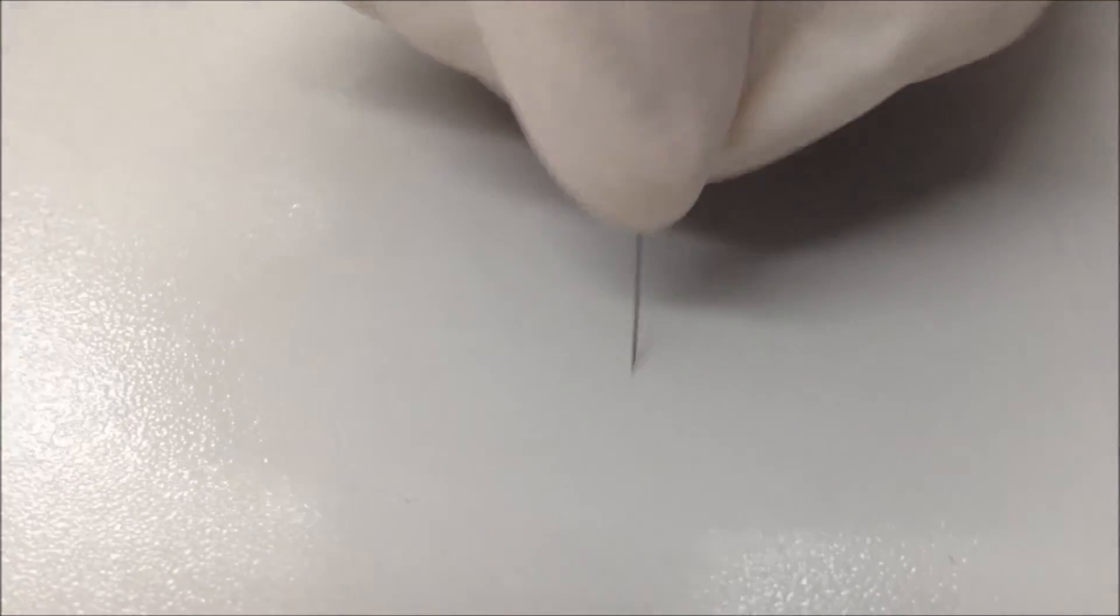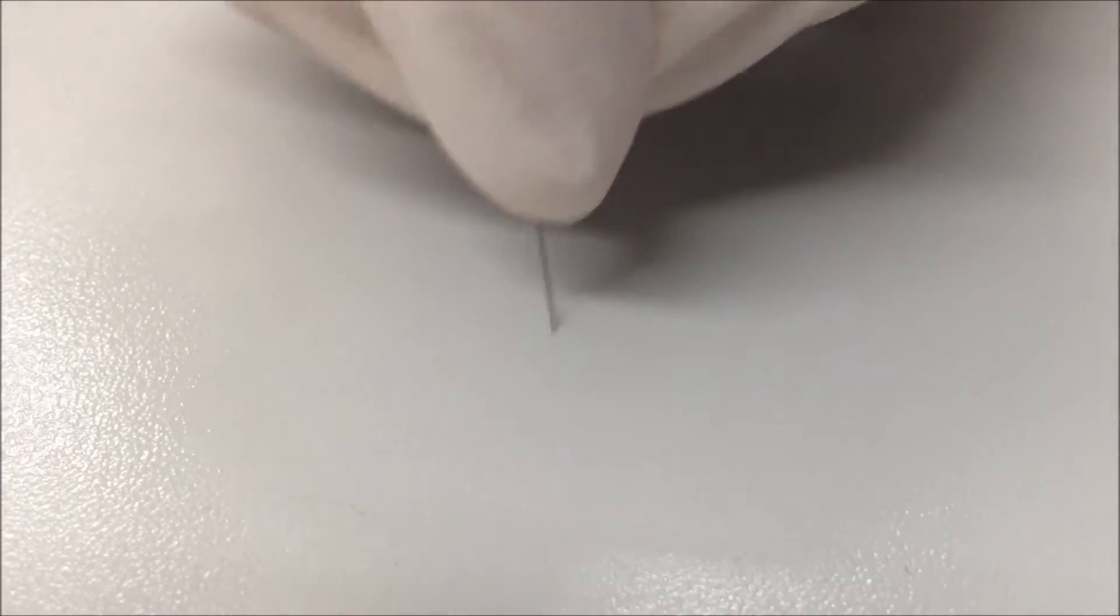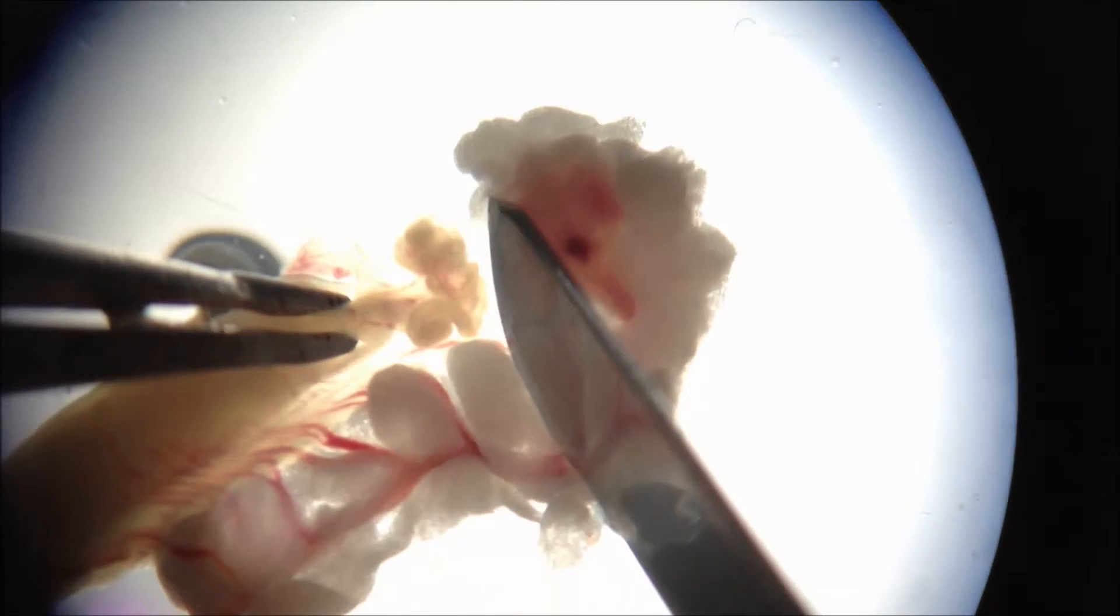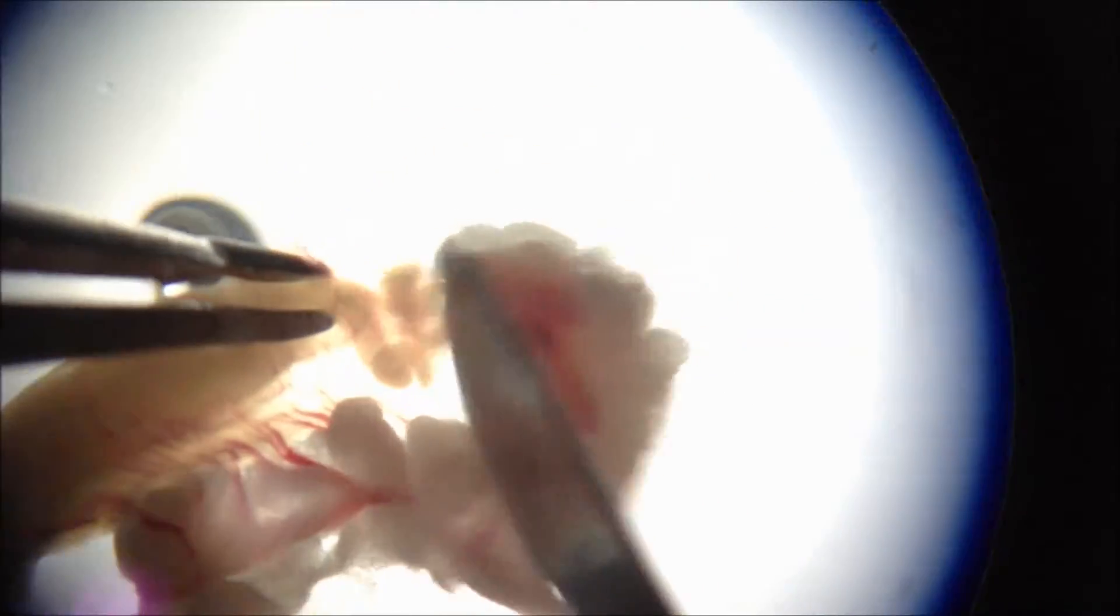Firstly, smooth out the edge of a 0.3 mm needle on a clean surface to facilitate penetration of the oviduct. The ovary and the uterine horn must be removed in order to work only with the oviduct. First, remove the ovary and then continue with the uterine horn.